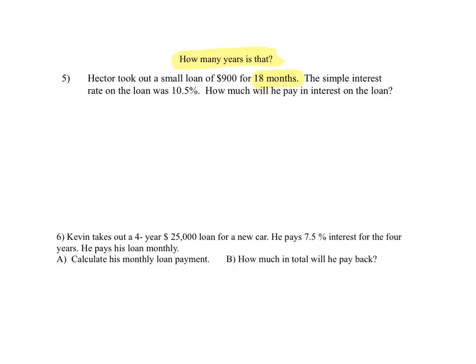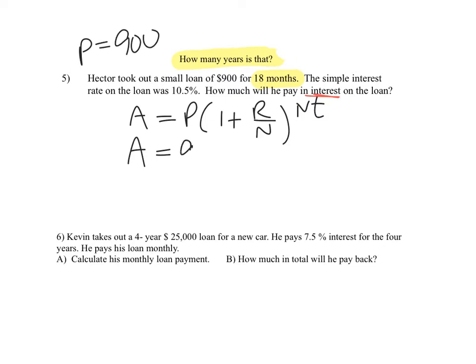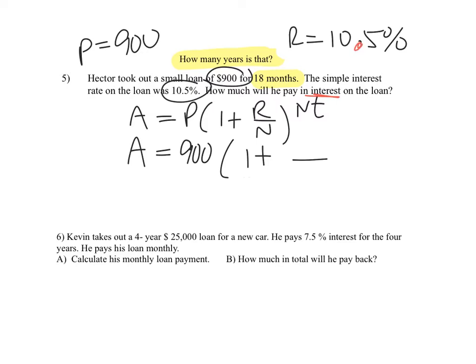Problem 5. Hector took out a small loan of $900 for 18 months. The interest rate on the loan was 10.5%. How much will he pay back in interest? Let's write out our interest formula: A equals P parentheses 1 plus R over N, raised to the N times T power. The loan amount is the principal, so P is $900. The interest rate R is 10.5% — a very high interest rate — so moving the decimal two places to the left gives R = 0.105. N, for annually, is going to be 1.